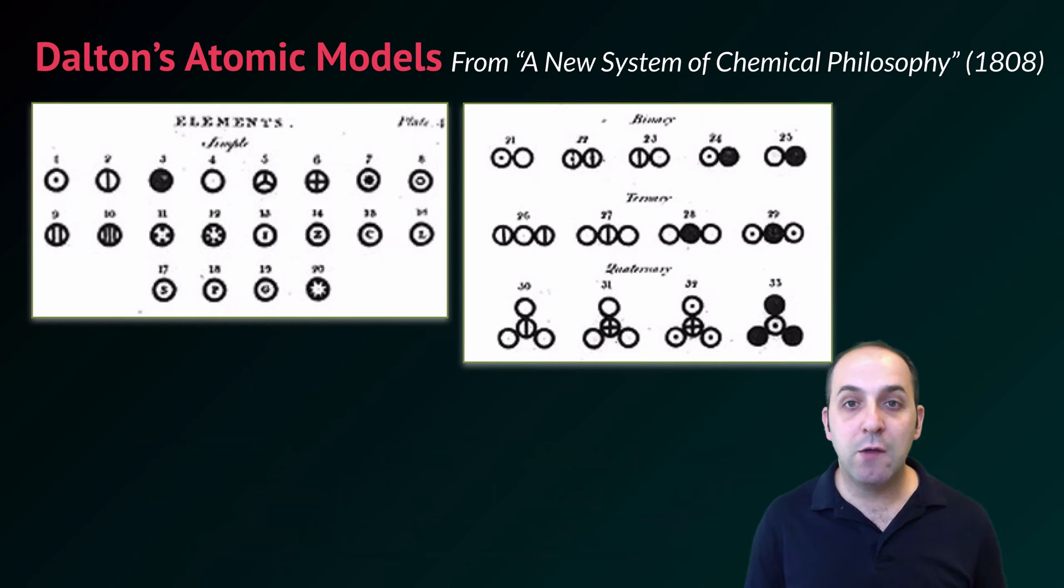Dalton writes a book in 1808, and this is his notation that he uses. You can see that he's thinking about the different types of elements as small spheres, but he's representing the different spheres in different ways to demonstrate that there is something different about the different elements.